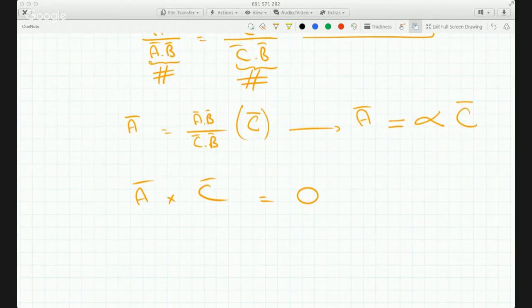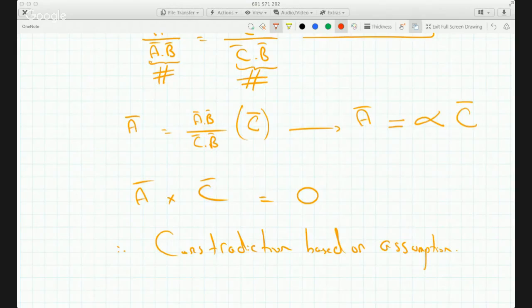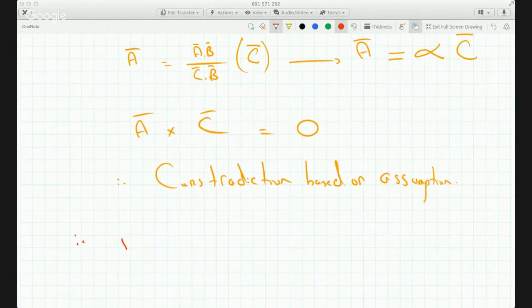Okay, unless A is some scalar multiple of vector C, well, if A is some scalar multiple of C, then their cross product would just be zero. Therefore, contradiction based on assumption.